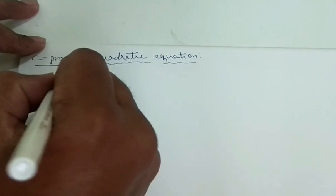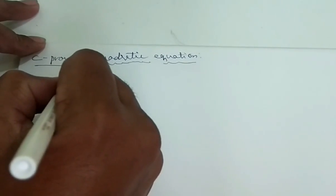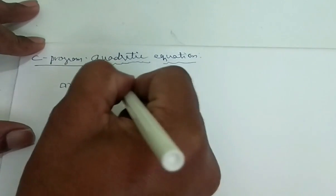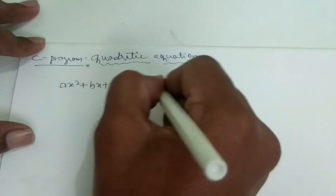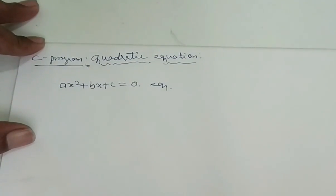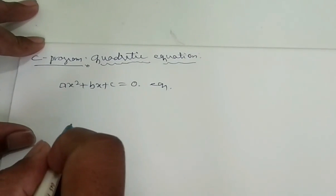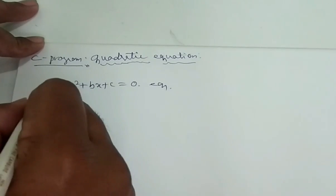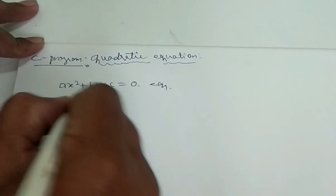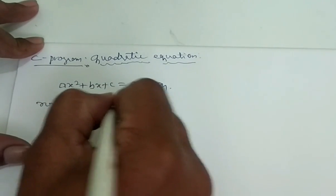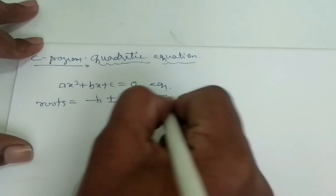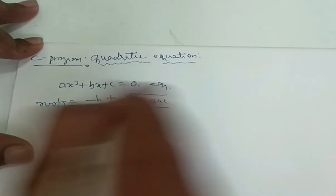As we know, the basic equation of a quadratic is AX squared plus BX plus C is equal to 0. This is an equation where we have to find the roots of this particular equation. I will go directly to the formula. The roots are equal to minus B plus or minus square root of B squared minus 4AC divided by 2A.